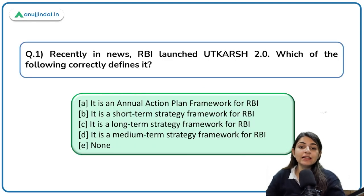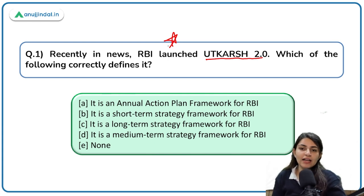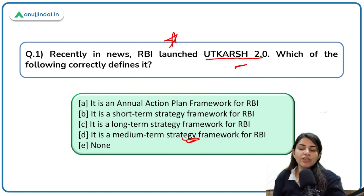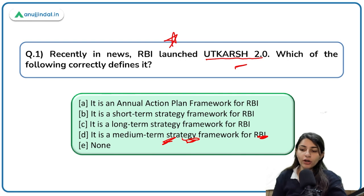The first question today is: Recently in news, RBI launched Utkash 2.0. Which of the following correctly defines it? This is a very important question because this was brought out by RBI. The frameworks brought in — strategy frameworks and any other frameworks brought out for the banking structure in India — are all important. Utkash 2.0 is a medium-term strategy framework for RBI, which tells what will be the mission, vision, and strategies that RBI will follow going forward.